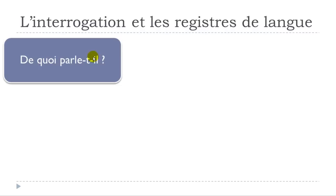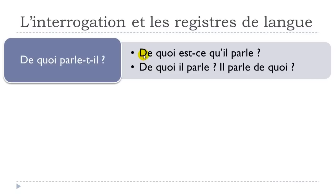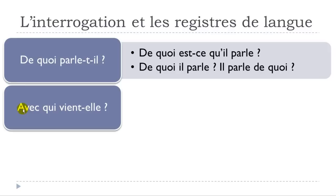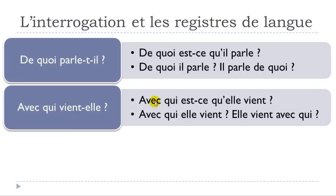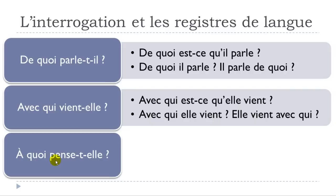Next question: DE QUOI PARLE-T-IL? — parler de means to talk about. The everyday version is DE QUOI EST-CE QU'IL PARLE? and the informal is DE QUOI IL PARLE? or IL PARLE DE QUOI? Then AVEC QUI VIENT-ELLE? — venir avec means to come with. Everyday: AVEC QUI EST-CE QU'ELLE VIENT? Informal: AVEC QUI ELLE VIENT? or ELLE VIENT AVEC QUI?